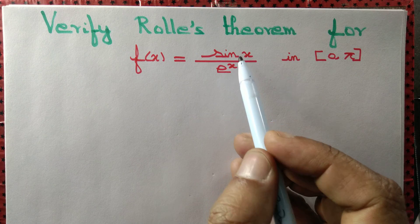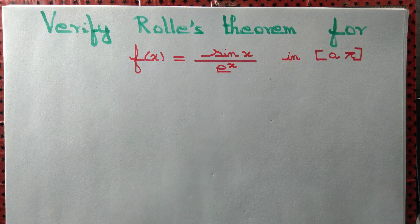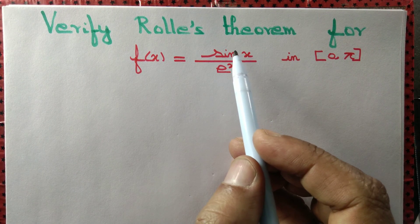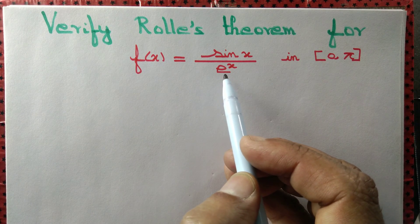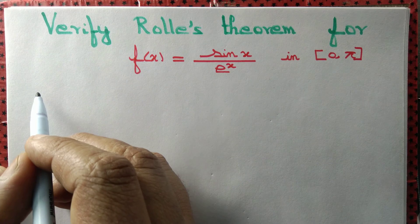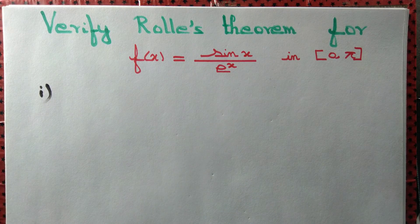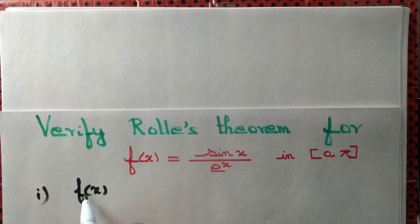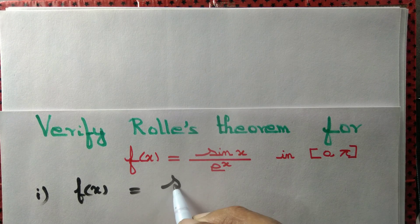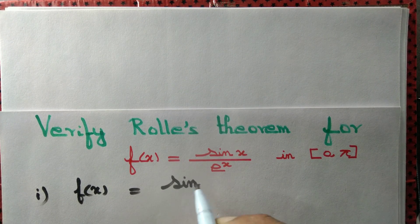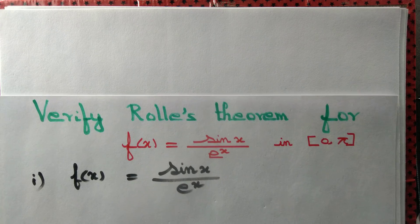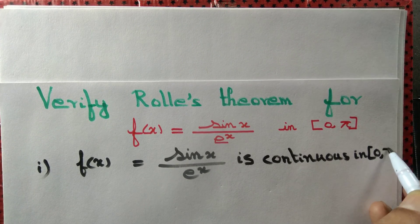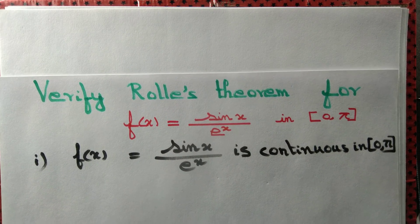We know that sin(x) is continuous and e^x is also continuous. If you divide a continuous function by another continuous function, you still get a continuous function, provided the denominator is not equal to 0. Since e^x is never equal to 0, f(x) = sin(x) / e^x is continuous on [0, π].